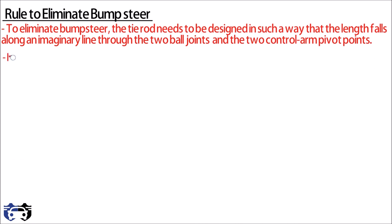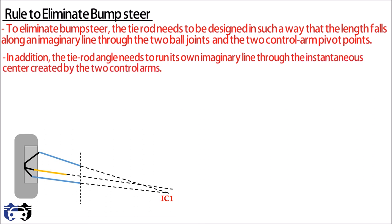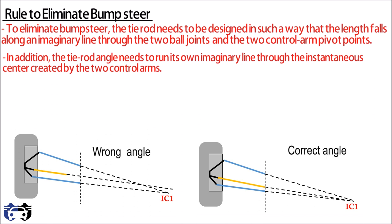In addition, the tie rod angle needs to run its own imaginary line through the instantaneous center created by the two control arms. That is, the imaginary line of all the three linkages should meet at the common center point IC1 at a particular instant.